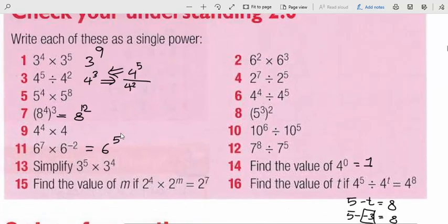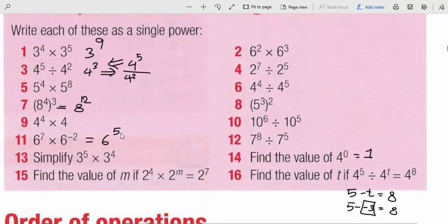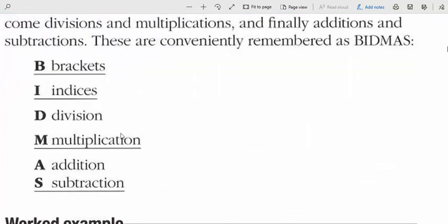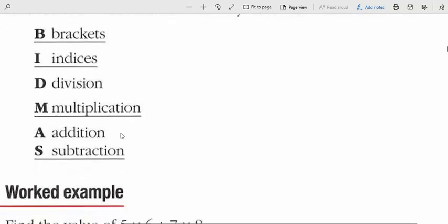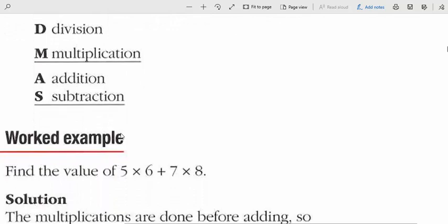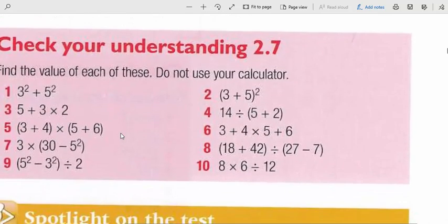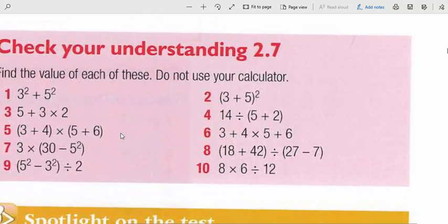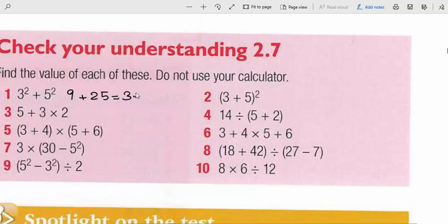The rest is homework — all similar to the ones I did. BIDMAS stands for Brackets, Indices (powers), Division, Multiplication, Addition, Subtraction — from left to right. Check your understanding 2.7: we have 3² plus 5². According to BIDMAS, we do the indices before addition: 3² is 9, plus 5² which is 25, then 9 plus 25 equals 34.